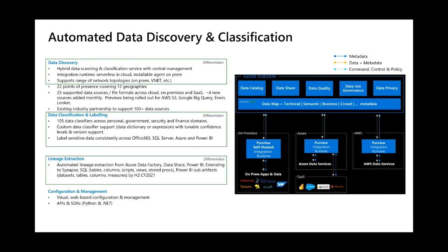Some of the biggest differentiators: the ability to do data scanning and classification from a central system for on-premises, multi-cloud, and SaaS-based services. We have over 22 points of presence in 12 geographies and are continuing to expand into both Azure data centers as well as AWS and Google data centers.